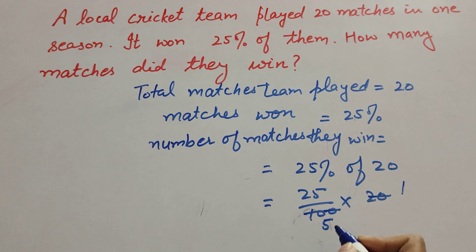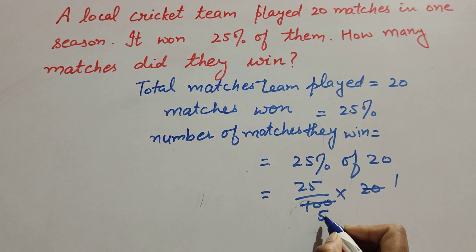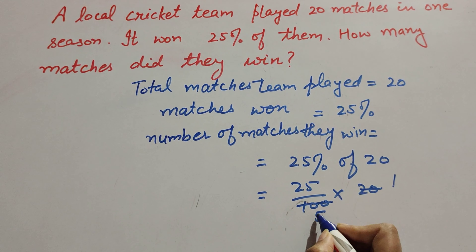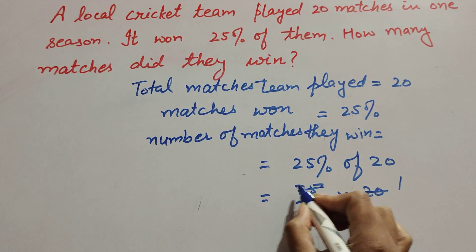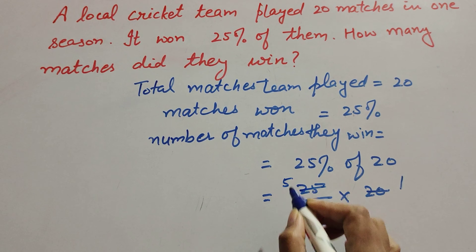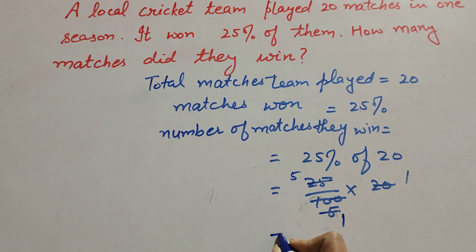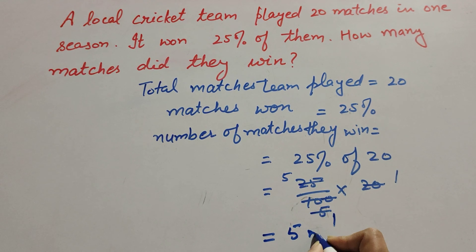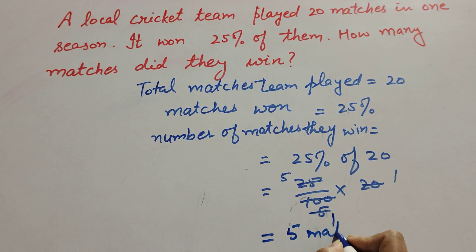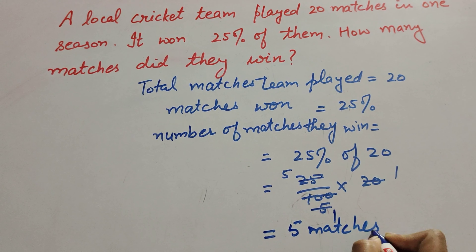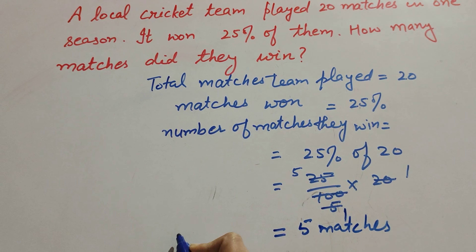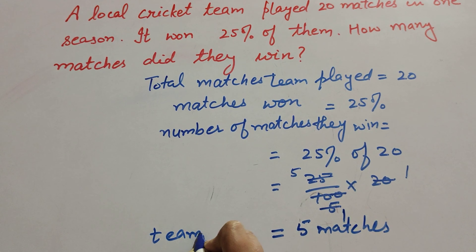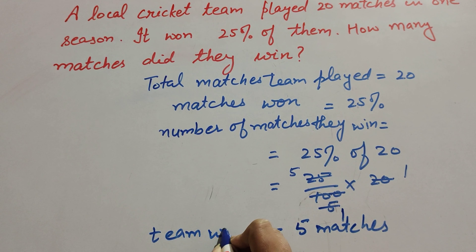Again, 5 and 25 are both divisible by 5, so we cancel them: 5 ones are 5, 5 fives are 25. So the team won 5 matches.